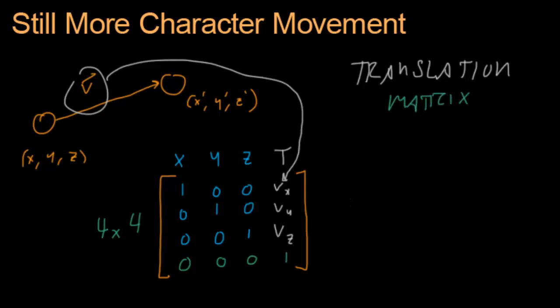That is a matrix that when you multiply by some vector, and now this is going to have to be a 4x1 vector instead of a 3x1 vector like we were using before. But when you multiply by this x, y, z vector...